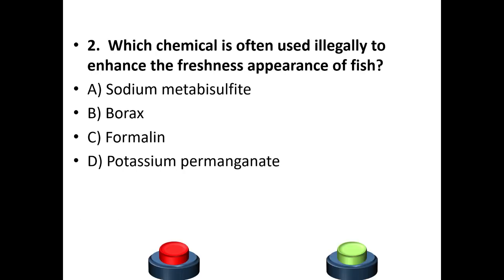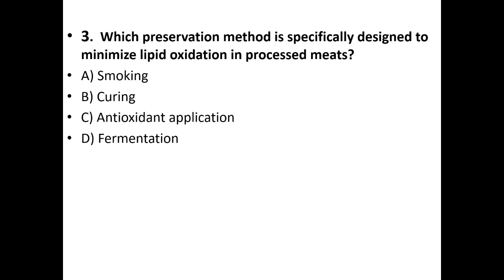Second question: Which chemical is often used illegally to enhance the freshness and appearance of fish? Options: sodium metabisulphite, borax, formalin, potassium permanganate. The answer is option C — formalin.